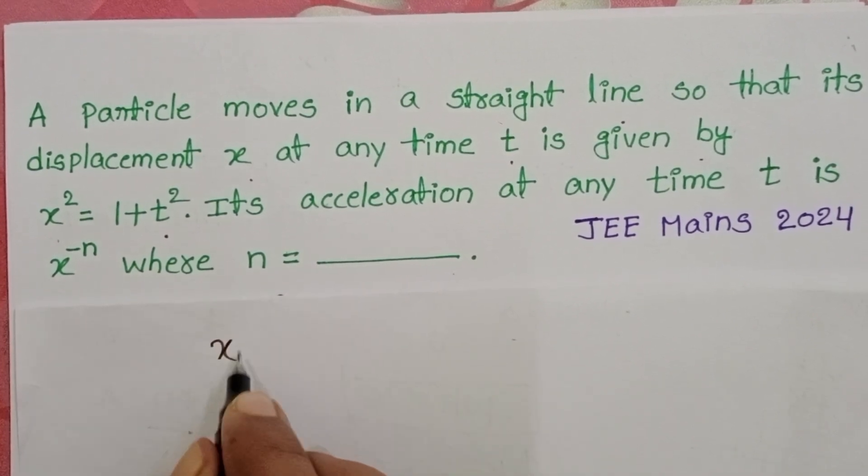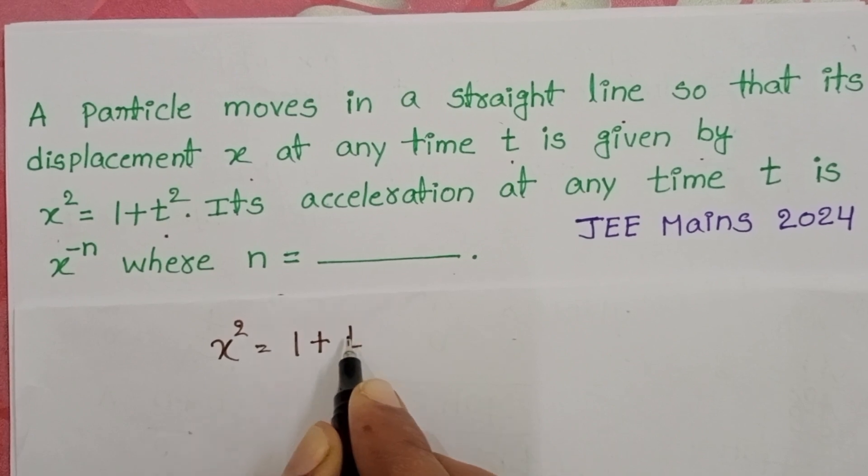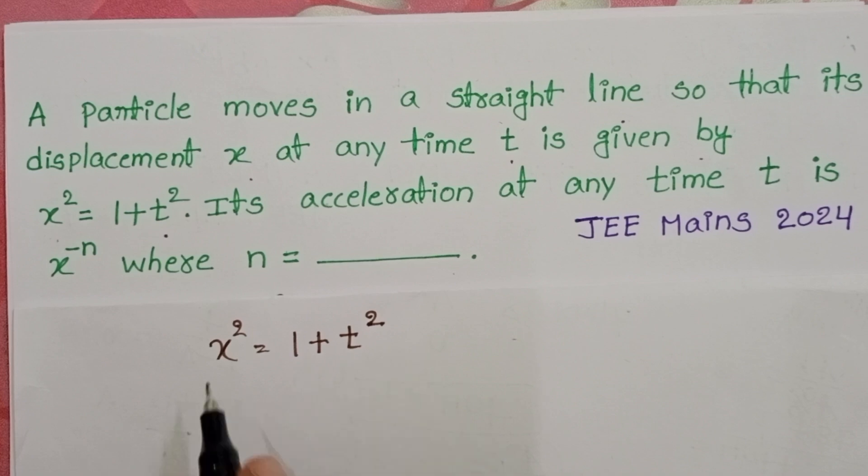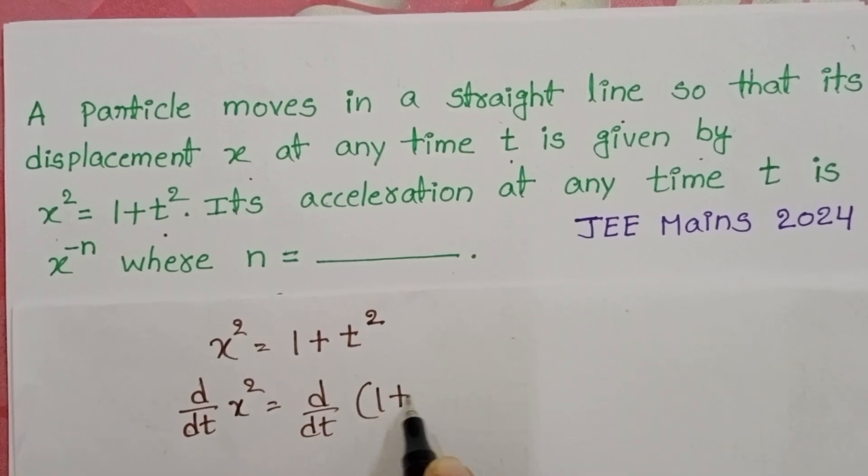We know rate of change of displacement is called velocity. So first differentiate the given equation with respect to time on both sides. d/dt of x² equals d/dt of (1 + t²).